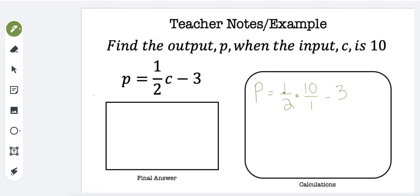Now when I do 1 half times 10, I'm going to have 1 times 10 is 10 and 2 times 1 is 2. So 10 over 2 is 5.